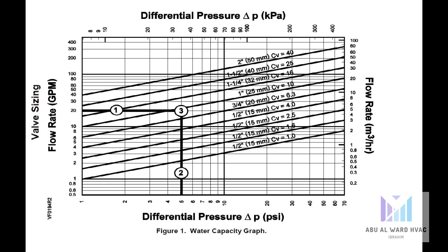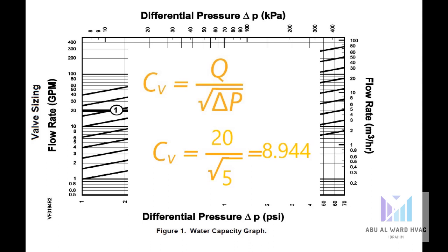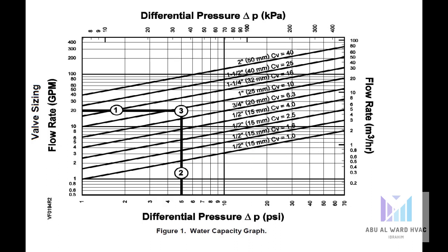First, we know the specifications. Next, we go to the valve sizing steps using the sizing chart. We take the flow in GPM and the valve differential pressure ΔP, locate them on the chart, and read off the Cv value. Applying the formula, we get Cv equals 8.9; the nearest higher value is 10, so Cv is 10. Therefore we select a one-inch valve.